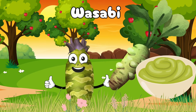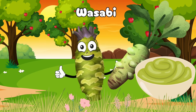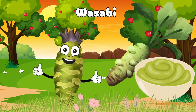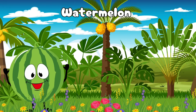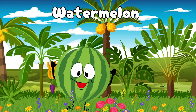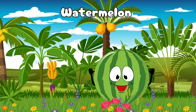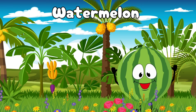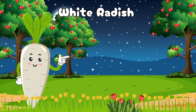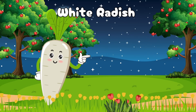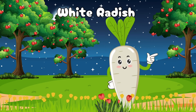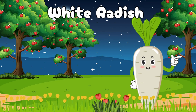This is wasabi. The letter W is for wasabi. Wasabi. This is a watermelon. The letter W is for watermelon. Watermelon. This is a white radish. The letter W is for white radish. White radish.